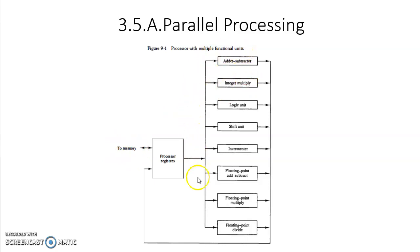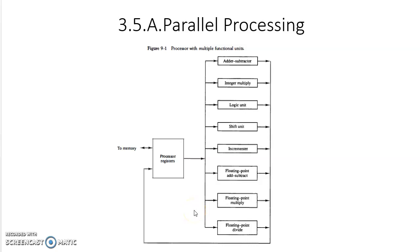Parallel processing can be accomplished by having individual independent functional units. ALU is a centralized functional unit with many capabilities, but all capabilities cannot be utilized at a time. With individual functional units, you can use all of them simultaneously — you just need to provide different data to each. Parallel processing systems can be classified in different ways based on the internal organization of the processor, interconnection structure, or the flow of information through the system.